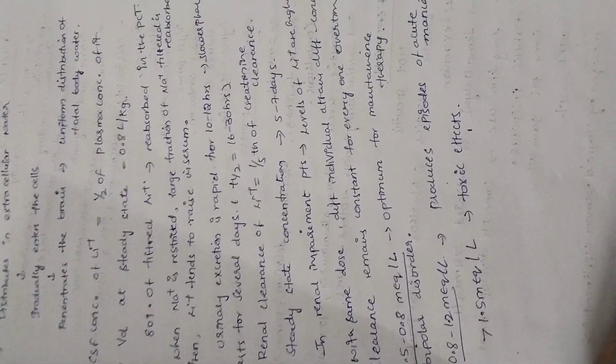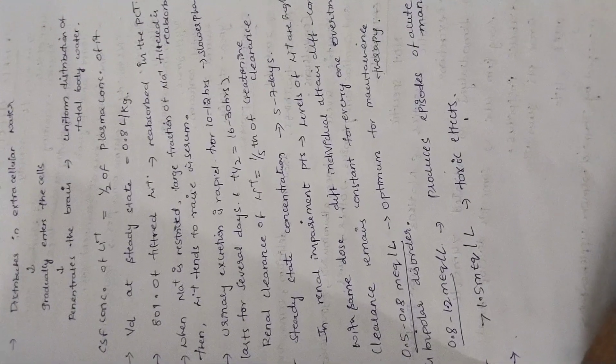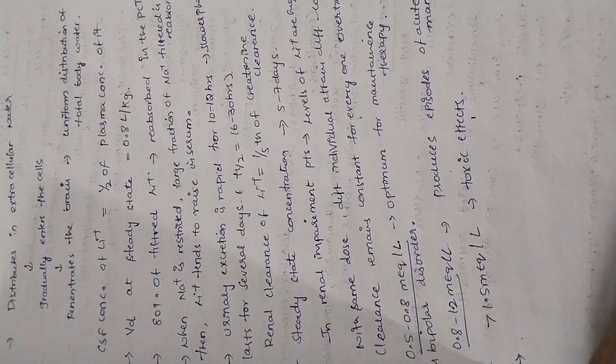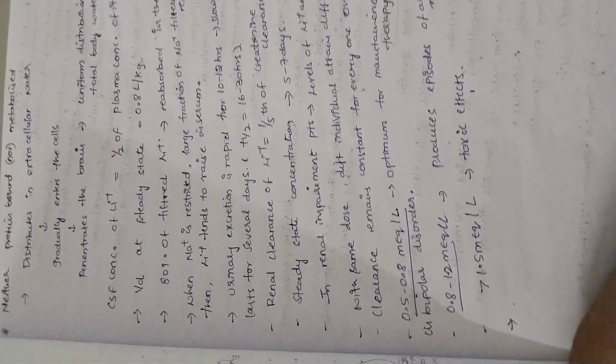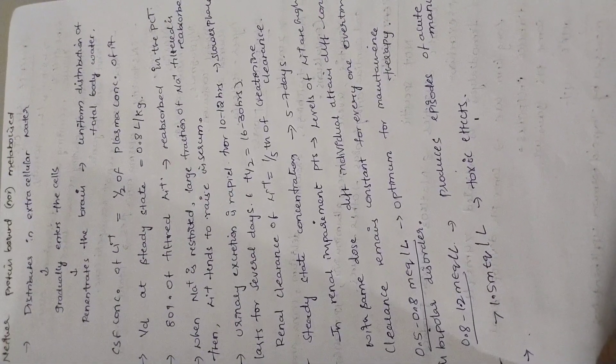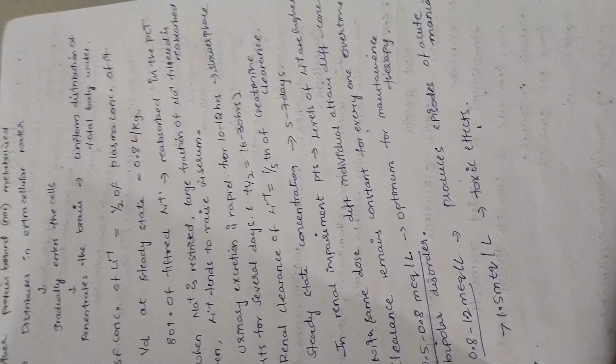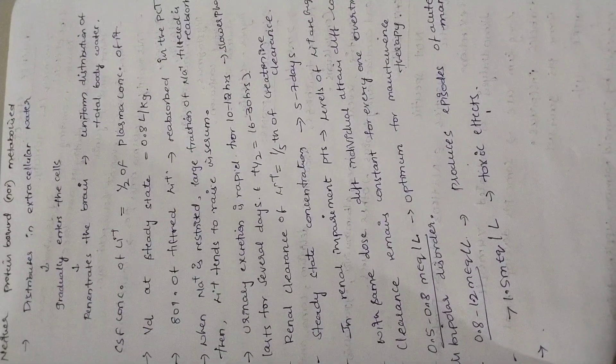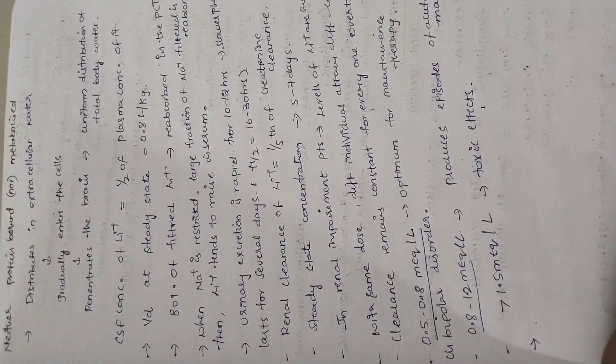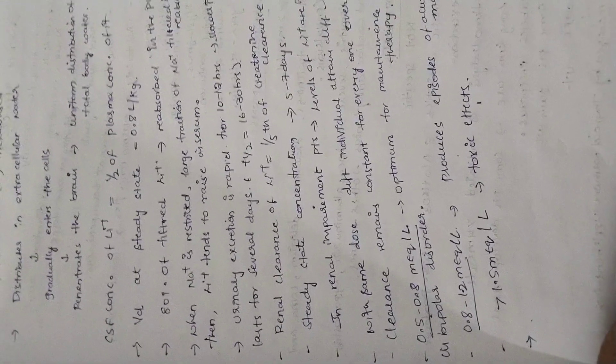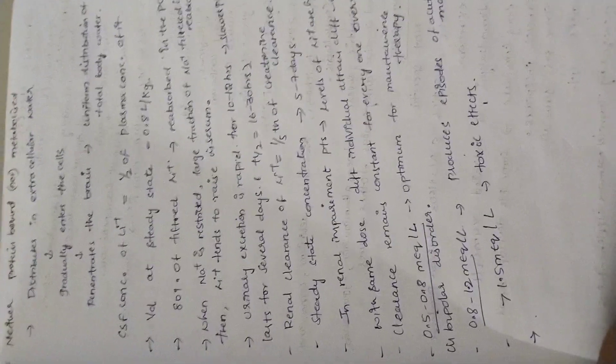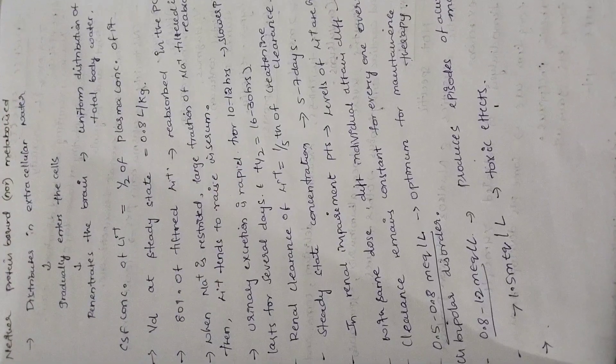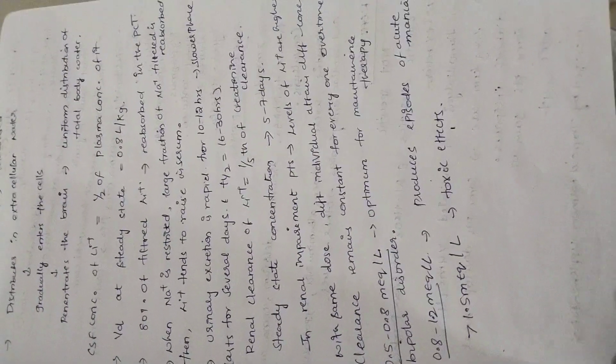If we take creatinine clearance as 75 ml, then 15 ml will be renal clearance of lithium. If we take it as 95 ml, then 19 ml will be renal clearance of lithium. Steady state concentration will be obtained within 5 to 7 days. In renal impairment patients, levels of lithium are higher because kidney cannot eliminate lithium easily. Renal clearance is one-fifth of creatinine clearance. With same dose, different individuals will attain different concentrations, but clearance remains constant over time. 0.5 to 0.8 mEq per liter is optimum for maintenance therapy in bipolar disorders. 0.8 to 1.2 mEq per liter produces episodes of acute mania. Greater than 1.5 mEq per liter will give toxic effects.